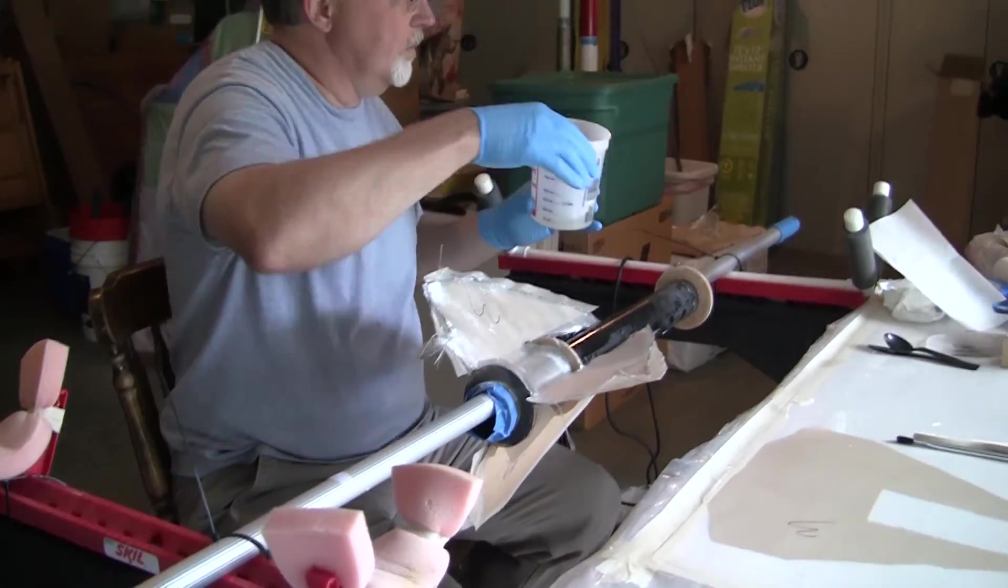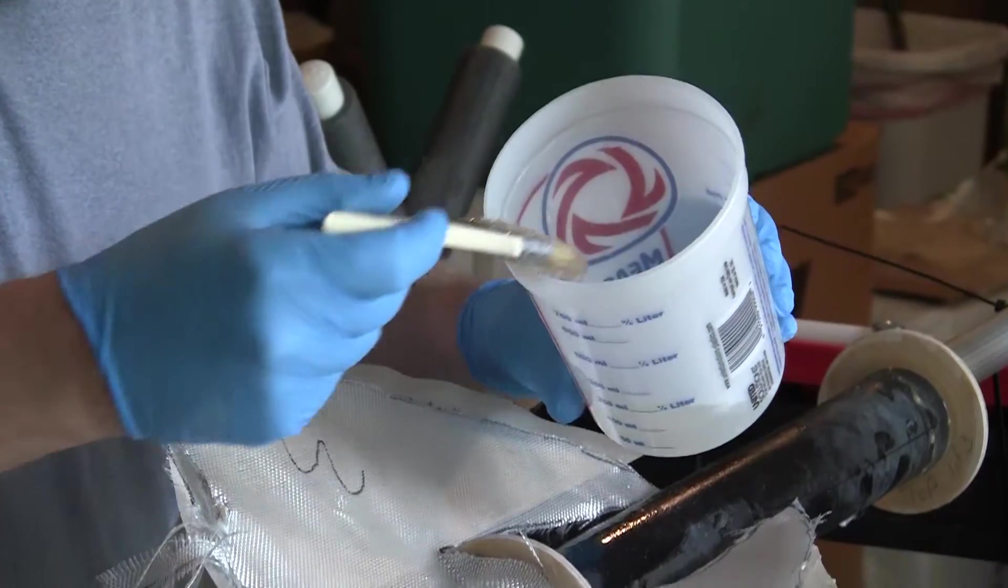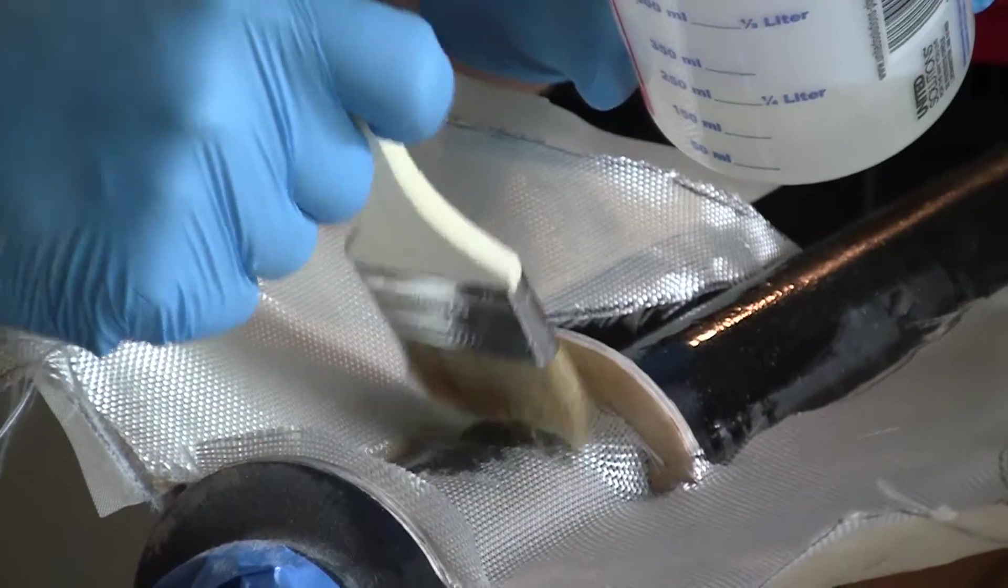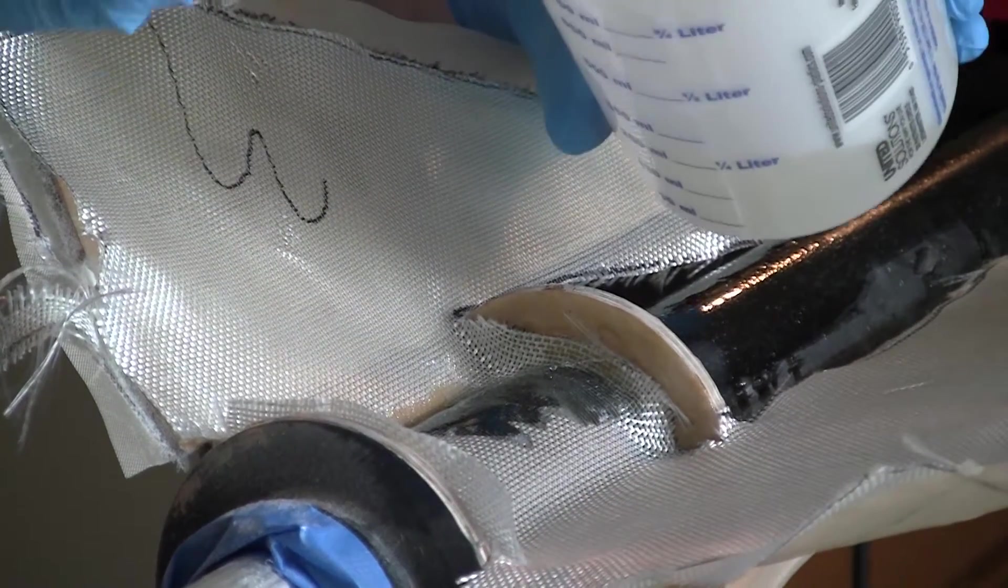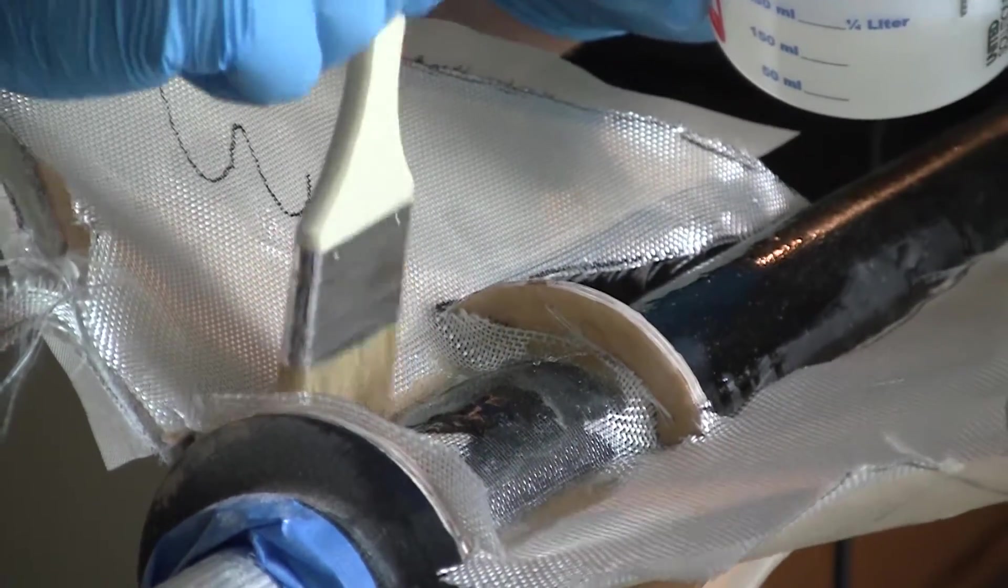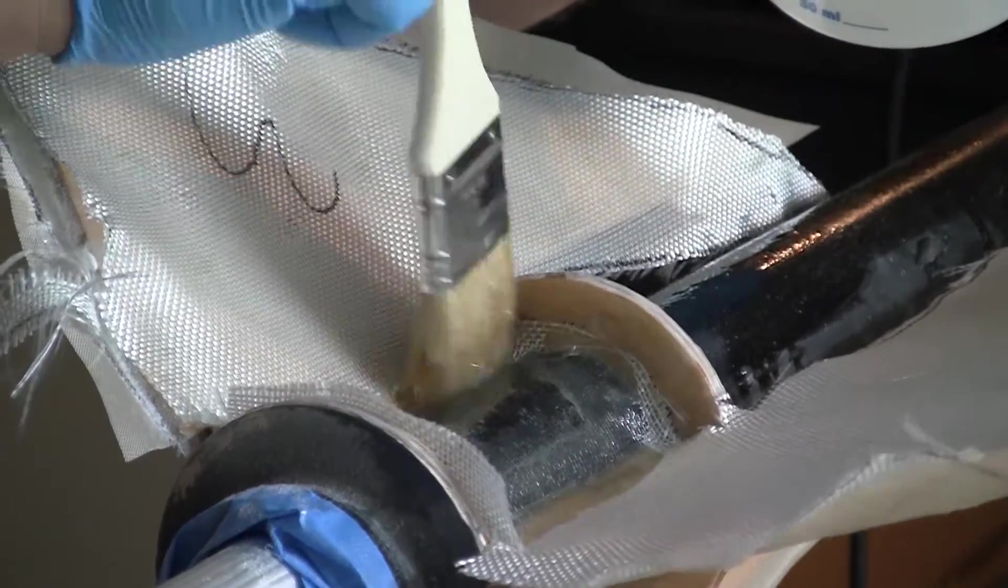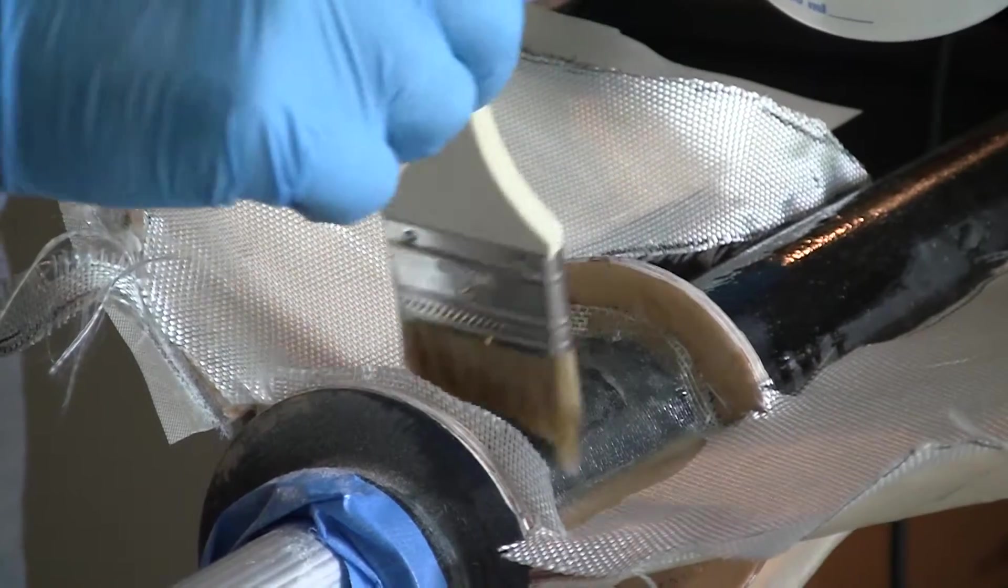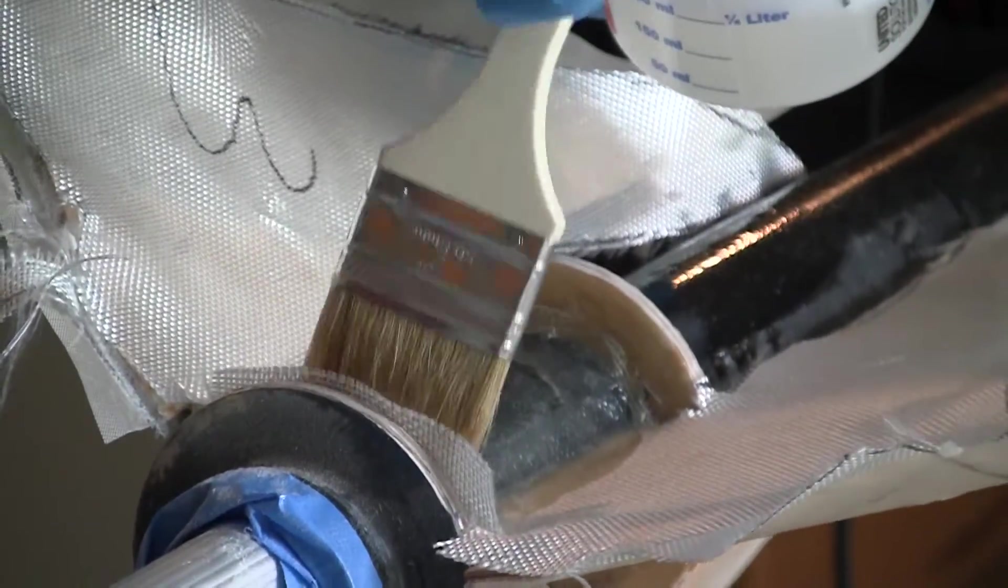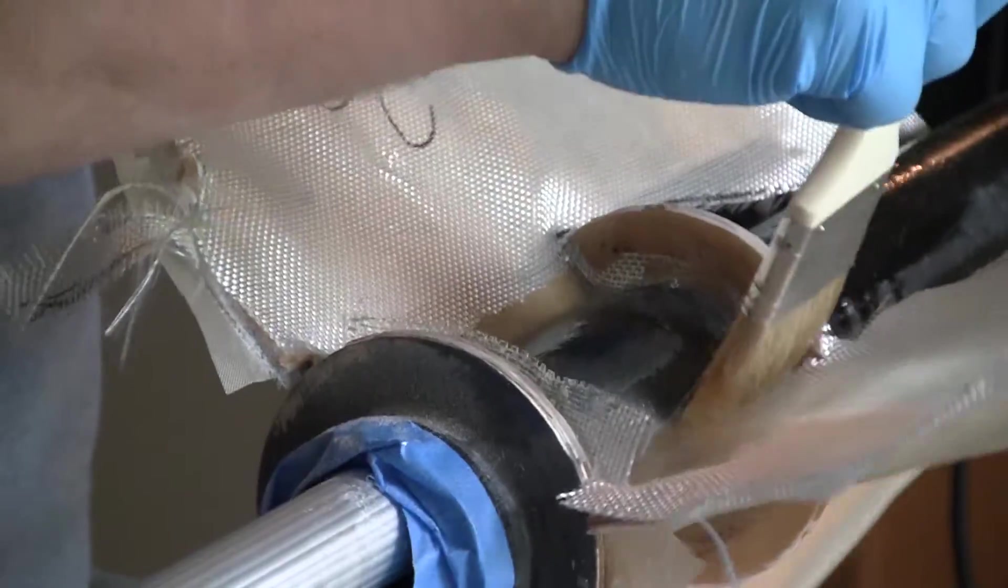We mix the West systems like before when we did the other tubes and we bring it in, start with the center, wetting it out to the tube. A lot more blotting in this procedure. Unlike the tubes where we're trying to line them up and get a nice coverage, this we don't have to worry about the smoothness as much. We're doing this for strength. We're just trying to get it to conform the best we can to the different surface patterns.